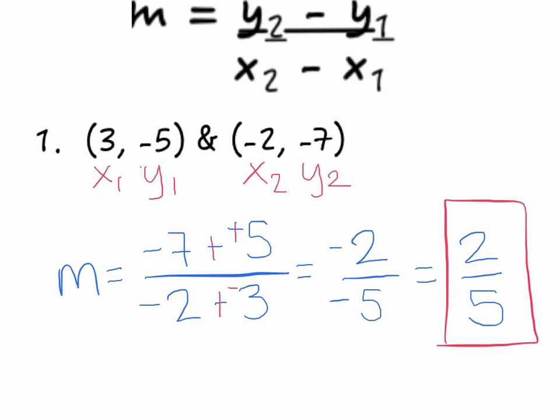To connect back to the formula: 2 is my vertical change, or my rise, and 5 is my horizontal change, or my run.